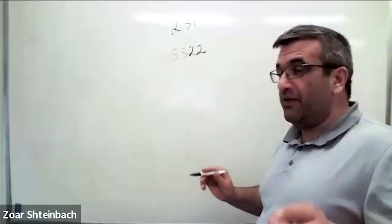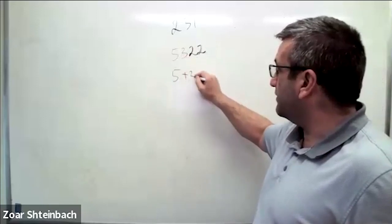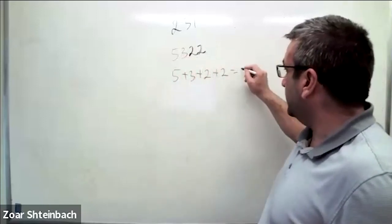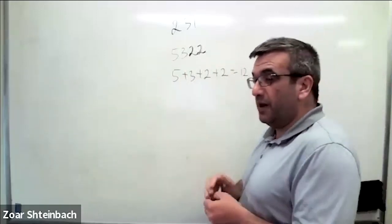To check if a number is divisible by 3, you add the digits. So it will be 5+3+2+2. What do we get? We'll get 12, and 12 is divisible by 3.